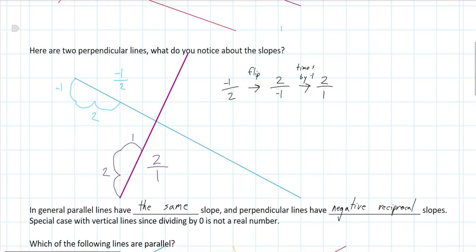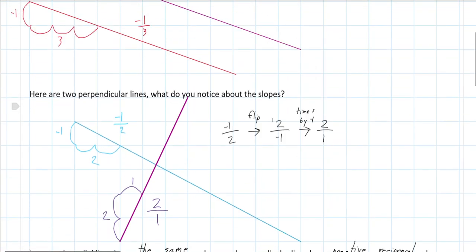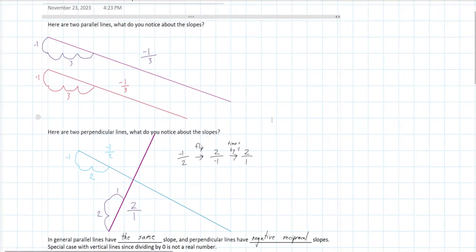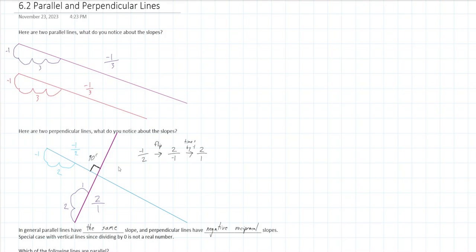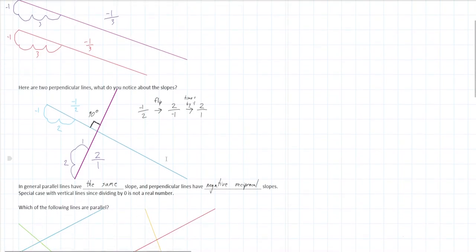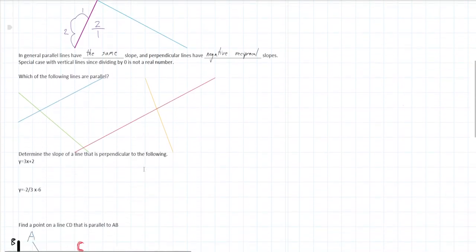Just in general for this topic: you can see a set of parallel lines and a set of perpendicular lines. Perpendicular means there's a 90-degree angle between the lines. Parallel means the lines will never touch, no matter how far you extend them.